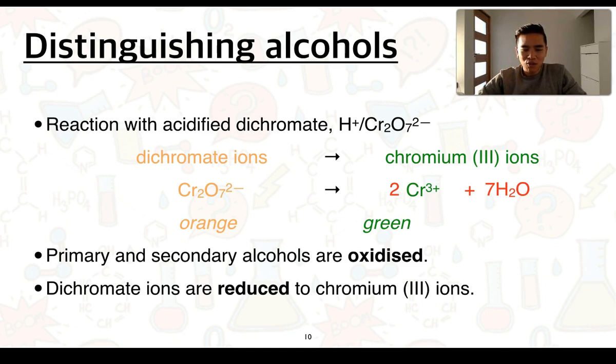And from there we then look at balancing hydrogens by adding H+ which is where the acidified component comes into play. And then as a last step we look at balancing charge by adding electrons. So this would represent the half equation for the reduction of dichromate to chromium three ions.